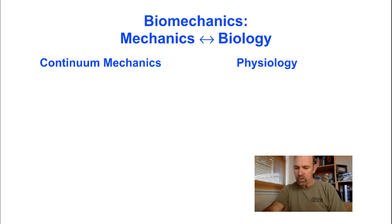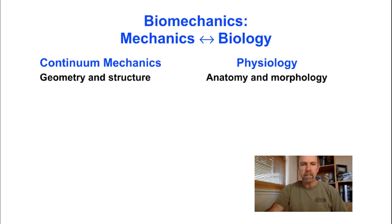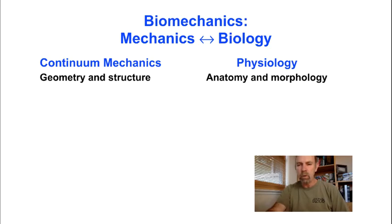This is a very natural and synergistic partnership. Let's consider on the left side the elements of every boundary value problem in continuum mechanics. There are key parallels to the major topics of study in physiology. The first thing we need in continuum mechanics is the geometry and structure of the body of interest. And the first thing we do in physiology is explore the functional anatomy and morphology of the tissue and organ of interest.